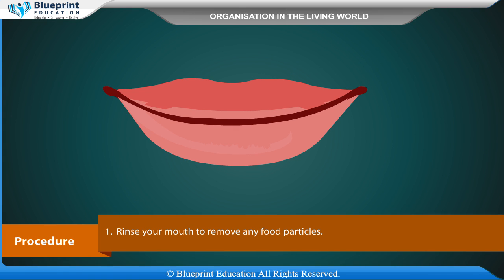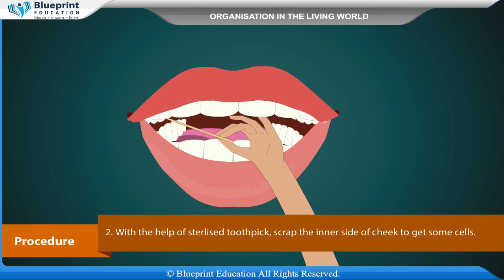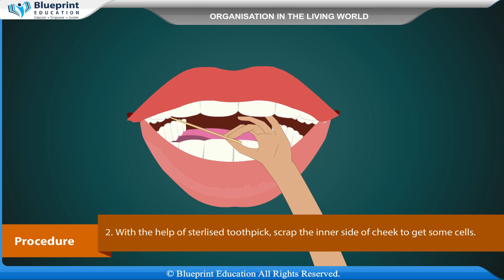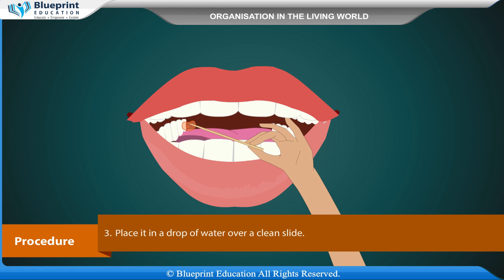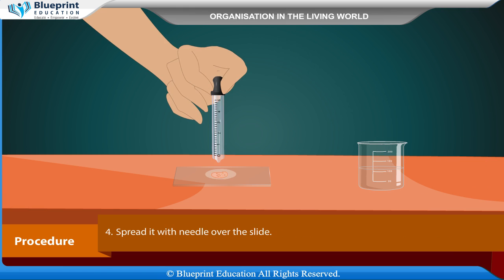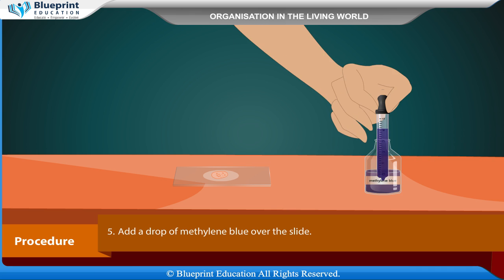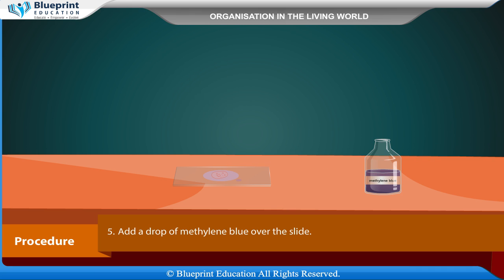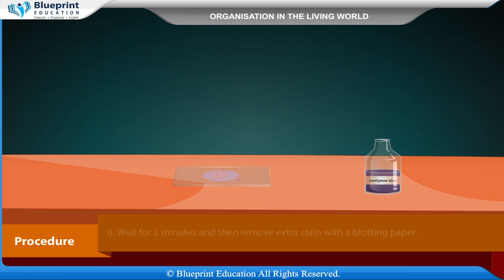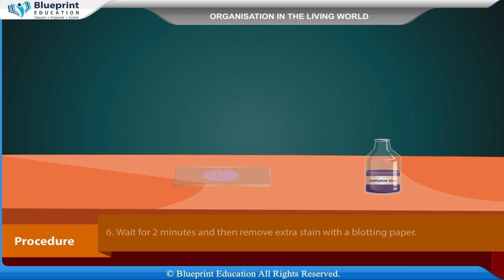Procedure: Rinse your mouth to remove any food particles. With the help of a sterilized toothpick, scrape the inner side of the cheek to get some cells. Place the scraping in a drop of water over a clean slide and spread it with a needle. Add a drop of methylene blue over the slide, wait for two minutes, then remove extra stain with blotting paper.